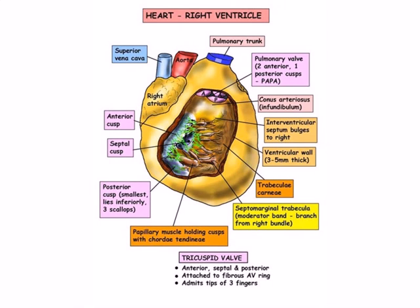Blood enters the right ventricle via the tricuspid valve from the right atrium. The valve has an anterior, a septal, and a posterior cusp — worth noting that the posterior cusp actually lies inferiorly — and to each cusp is attached a papillary muscle by fibrous chordae tendineae. The wall of the right ventricle is normally about 3–5 mm thick and is raised internally by a mass of interweaving muscle strands called the trabeculae carnii. Fairly low down on the anterior septal wall, some of this muscle joins the anterior papillary muscle and is called the septomarginal trabecula, or moderator band.